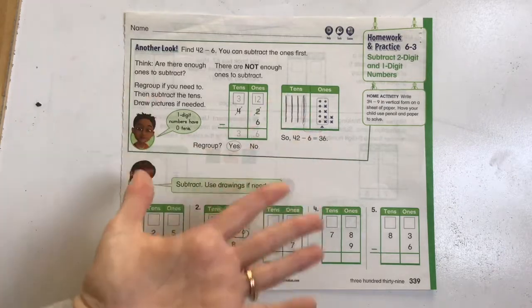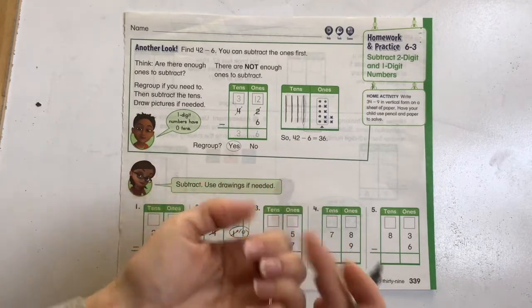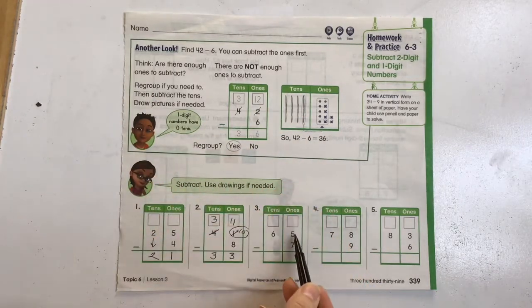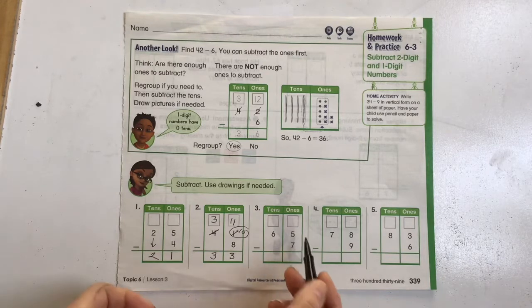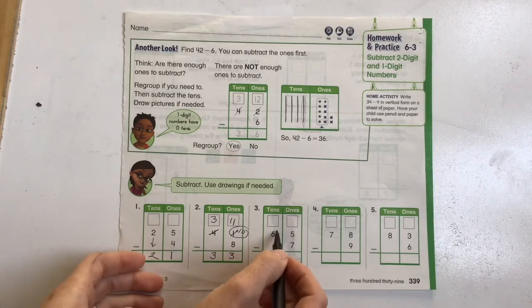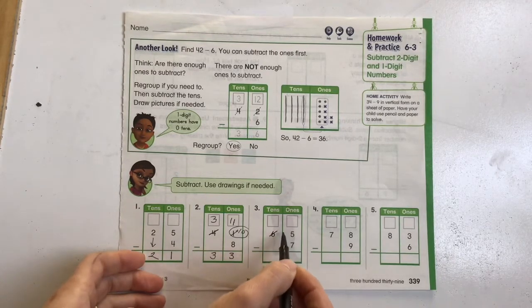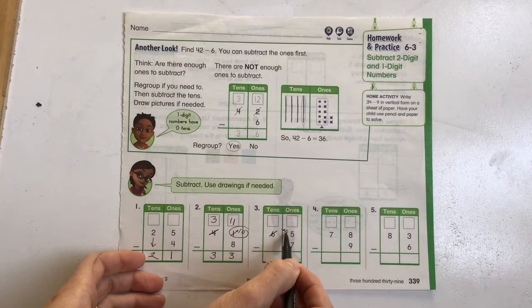Okay, 5 minus 7. If I have 5, it's definitely smaller than the number below. So we're going to need to regroup. We're going to take one group over here of 10 and add it over here.